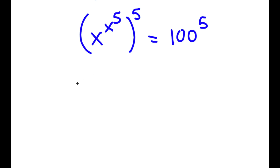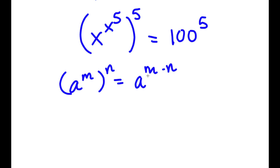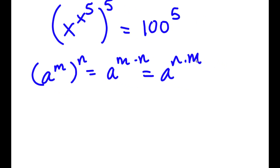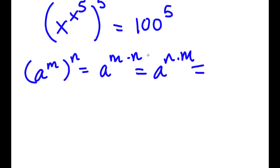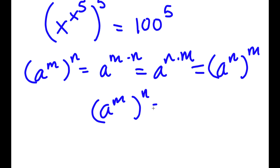If I have something in the form a to the power of m to the power of n, this is the same thing as a to the power of m times n. And a to the power of m times n is the same as a to the power of n times m — we can switch those places. So a to the power of m to the power of n equals a to the power of n to the power of m.